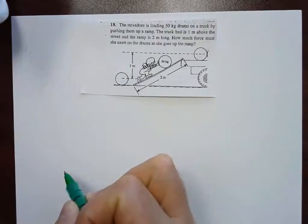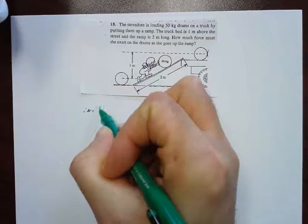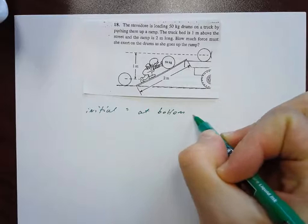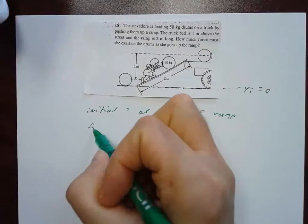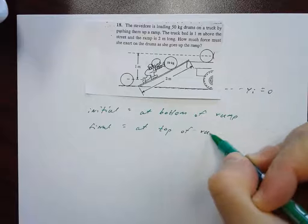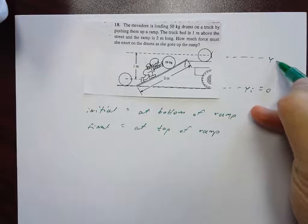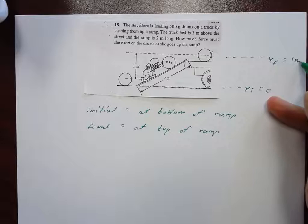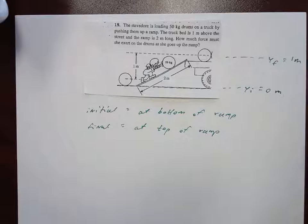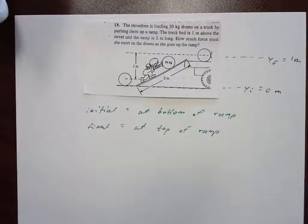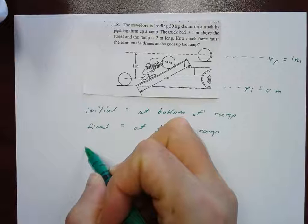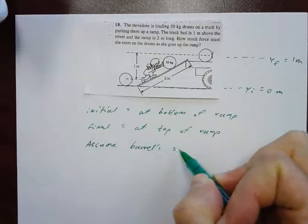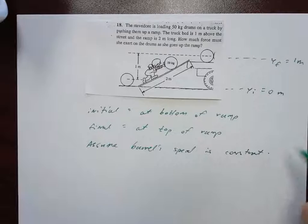We're going to draw a diagram, which I've just taped on here. We're going to define the initial place to be at the bottom of the ramp, and call our initial height zero. We're going to call the final place at the top of the ramp, and the problem tells us that the top of the ramp is one meter higher than the bottom. We're supposed to assume that this person is pushing the barrel at a constant speed, even though it doesn't say that.